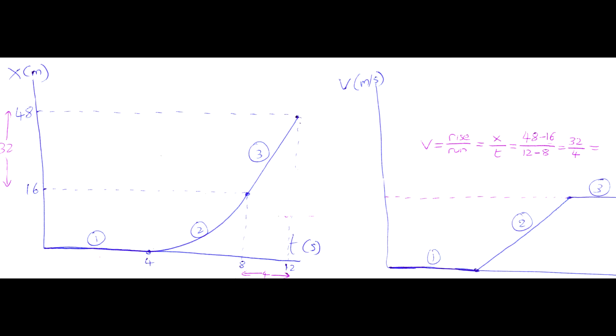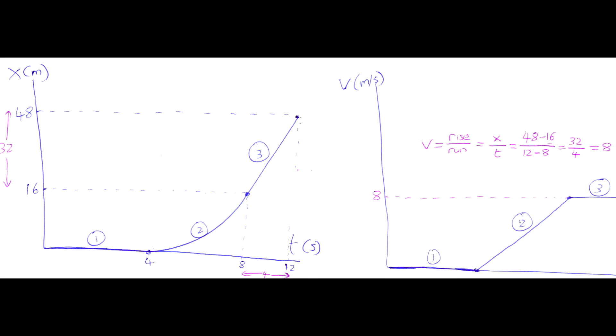48 minus 16 is 32. We divide that by the difference in the t-values, which is 12 minus 8, giving us 4. Doing 32 divided by 4, we get 8 meters per second for the velocity in section 3. So we can mark that 8 on our velocity-time graph.